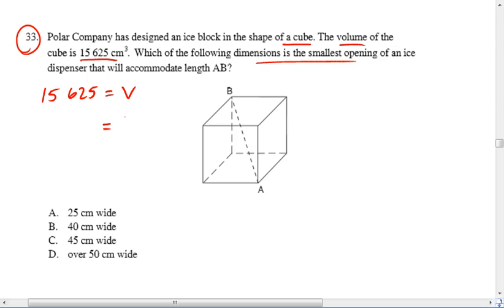Well, we know this thing's a cube, so the volume of a cube is the length of the side cubed. Hence the name cube. 15,625 is the length of our side cubed. Why don't we go ahead and find the length of the side by taking the cube root of 15,625. And if you grab your calculator and do that, you should get that S is 25 centimeters.